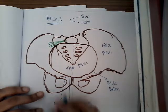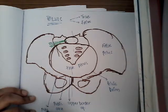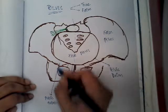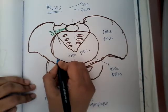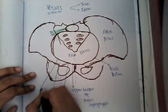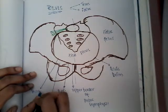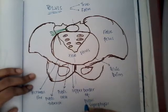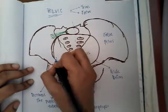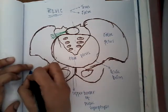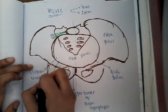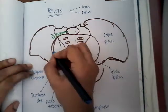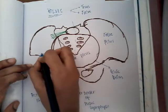The second landmark is the pubic crest, and the third is the pubic tubercle. Then there is the pectineal line. On both sides there is the ilio-pubic eminence — that is the fifth landmark — and then there is the ilio-pectineal line.